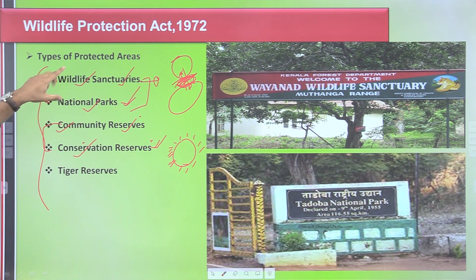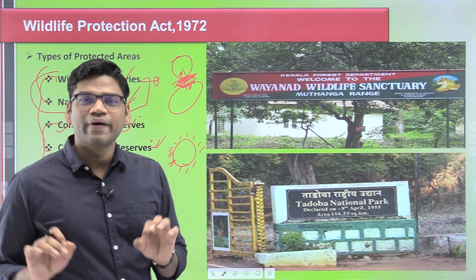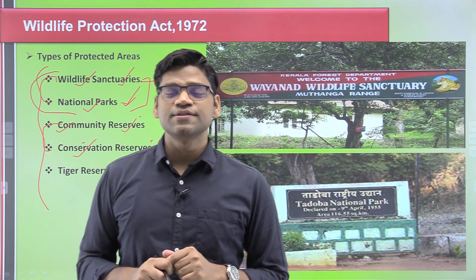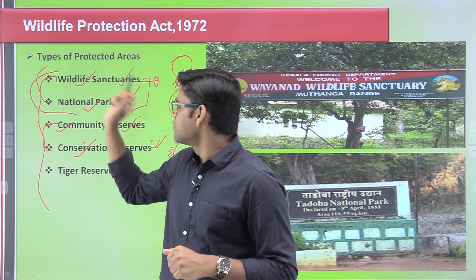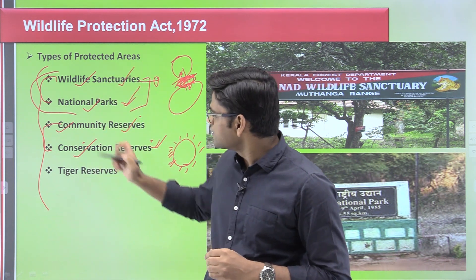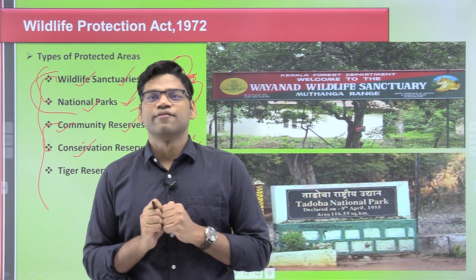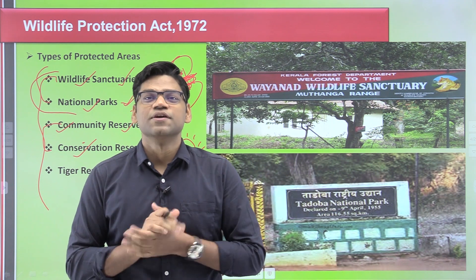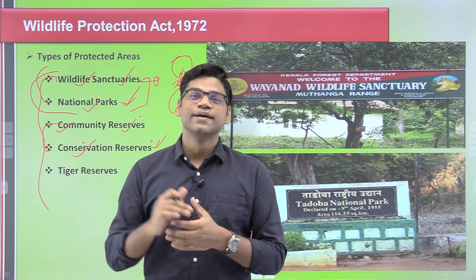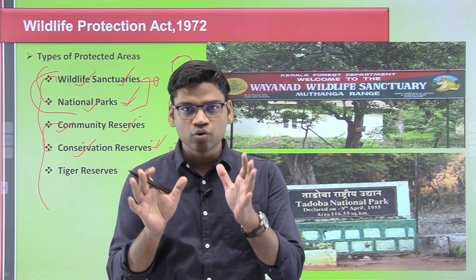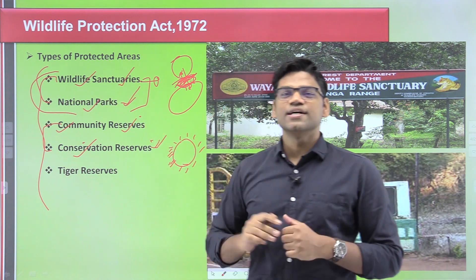Another important point is how these areas are declared. Wildlife sanctuaries and national parks can be declared by both central government and state government. No alteration in the boundary of national parks and wildlife sanctuaries can be done without the approval of the National Board of Wildlife. Also, these protected areas can be declared not only for conservation of flora and fauna but also for natural scenic beauty or geological formations — these are important keywords to remember.